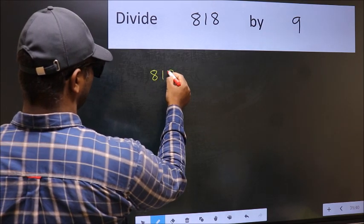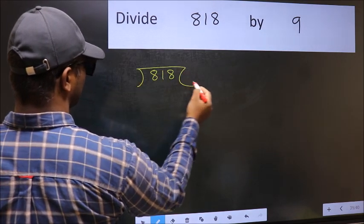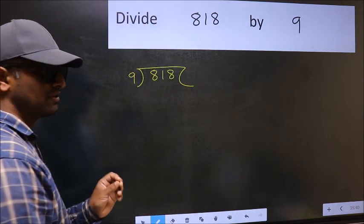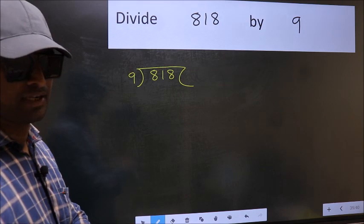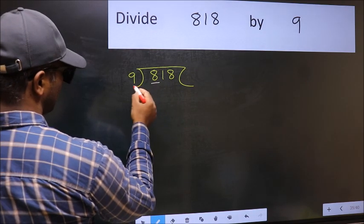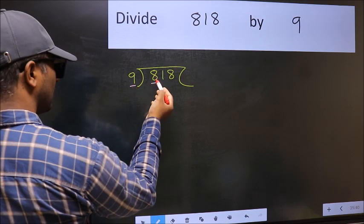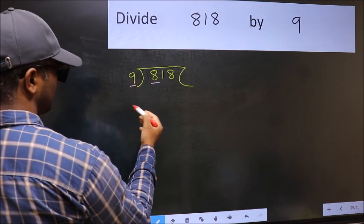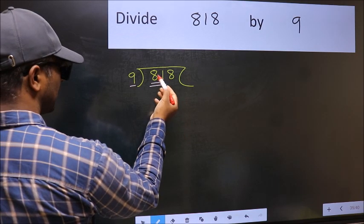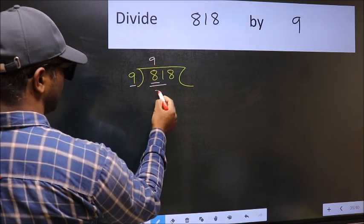818 and 9 here. This is your step 1. Next, here we have 8 and here 9. 8 is smaller than 9, so take 2 numbers: 81. When do we get 81 in 9 table? 9 nines 81.